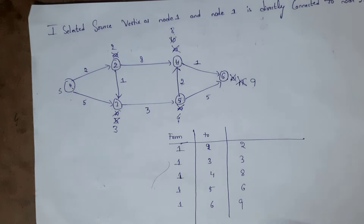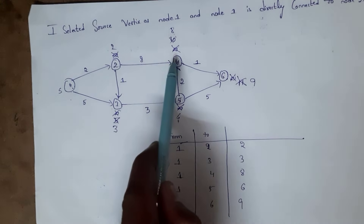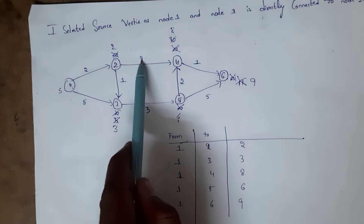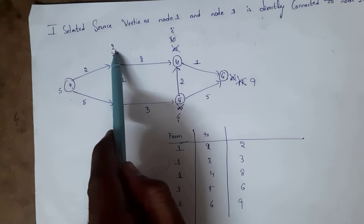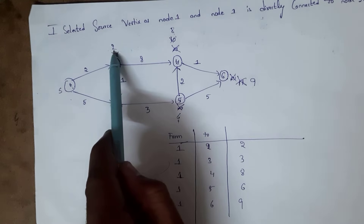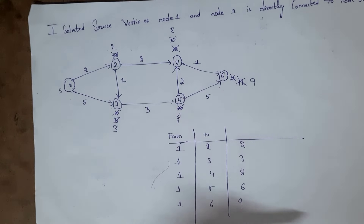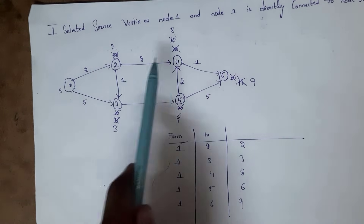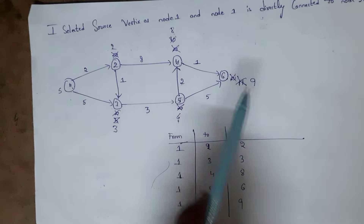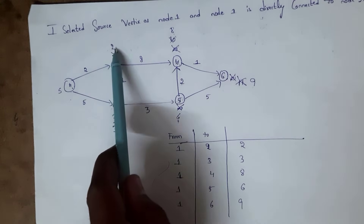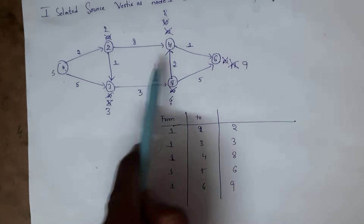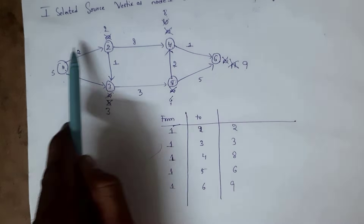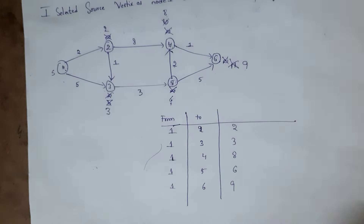You may have a doubt — from node 2 to node 4, the distance is 8. But why are we counting this value? Because we are finding the shortest distance from node 1 to node 4, so we need to count both 2 and 8. In an exam, don't write it like this informally — write the graph in a step-by-step manner.